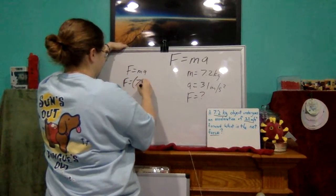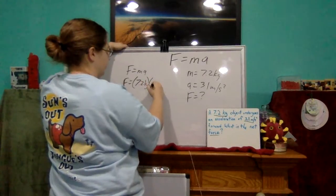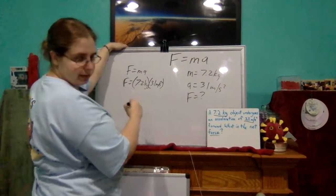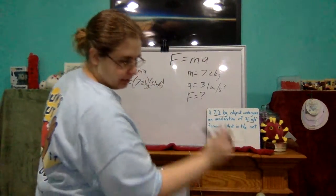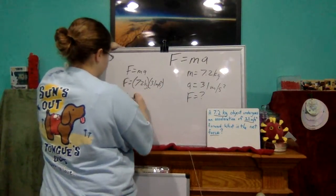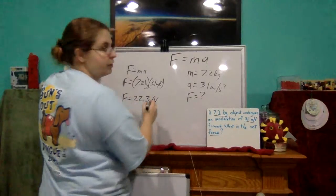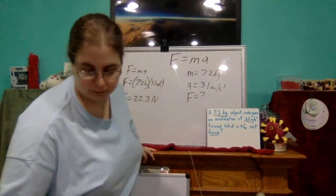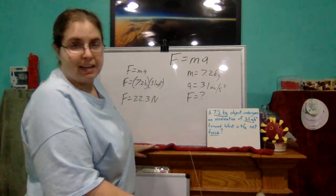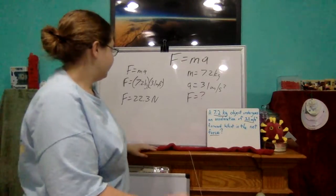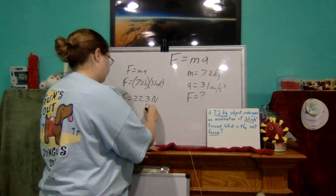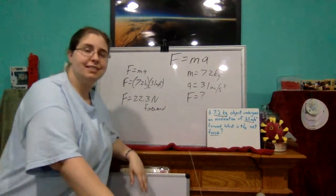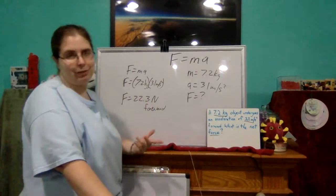Plug it in — we have 7.2 kilograms times 3.1 meters per second squared. And when we multiply those together, the force equals 22.3 newtons. Not too bad, right? And if we really want to be accurate, we would say forward, because force is a vector quantity, meaning it has magnitude and direction.